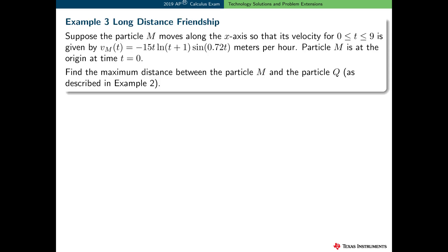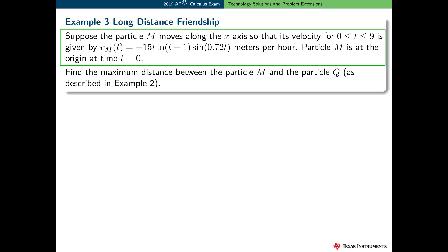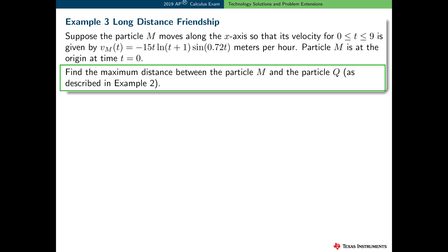Here is one more nice example. Suppose we have a new particle m that moves along the x-axis so that its velocity for t between 0 and 9 is given by this expression, and particle m is also at the origin at time t equals 0. Consider particle q as given in example 2 with velocity function over the interval 0 to 9. Find the maximum distance between these two particles.